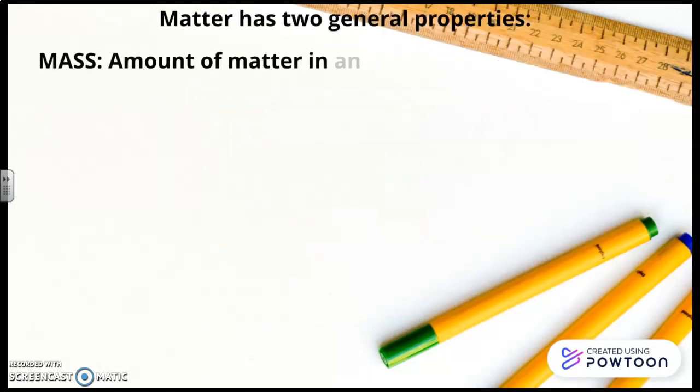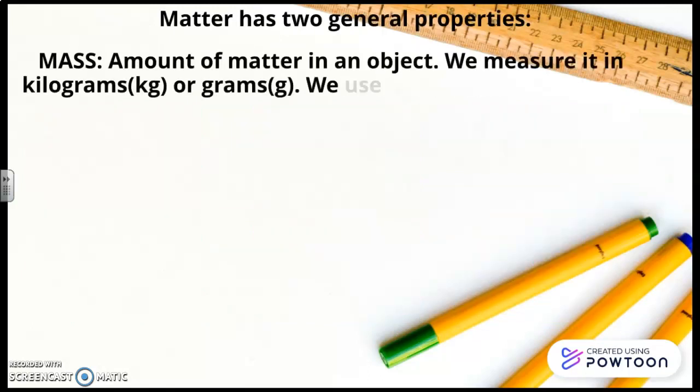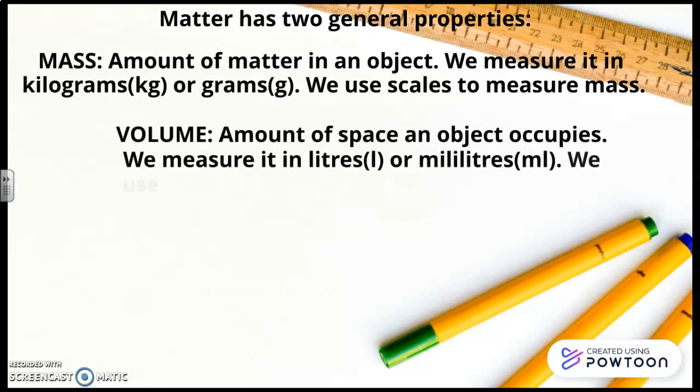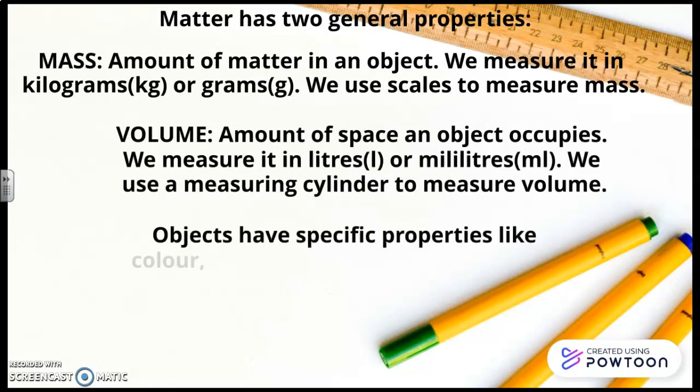Matter has two general properties. Mass, amount of matter in an object. We measure it in kilograms or grams. We use scales to measure mass. Volume, amount of space an object occupies. We measure it in liters or milliliters and we use a measuring cylinder to measure volume.